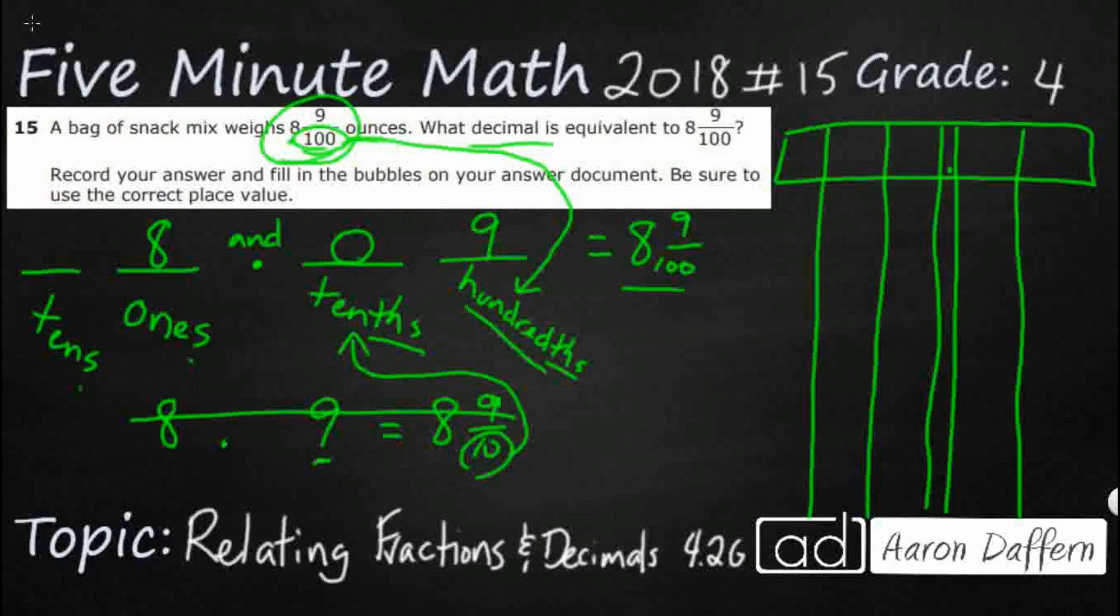And so what we're going to do here is place it just like we said, start with the decimal. You're going to put your eight right here, find your eight down here and bubble that in. You have to put your zero. Definitely put that zero right there. Find the zero, bubble it in. And then your nine, bubble it in. There you go. Eight and nine hundredths.